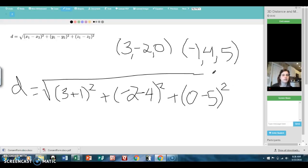And then after this, it's just simplifying. So the first guy is going to give me 4 squared, which is 16. The next one is going to give me negative 6 squared, which is positive 36. And then finally, 5 squared, which is 25.